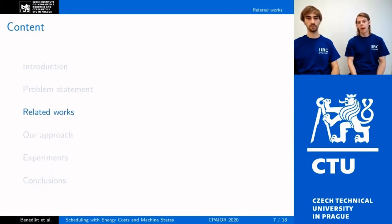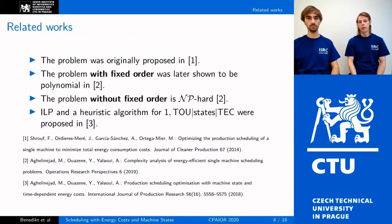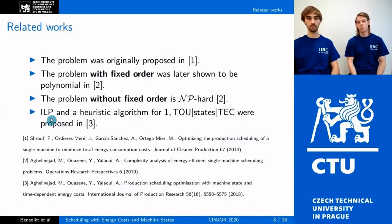Now we summarize the related literature. The scheduling problem jointly considering variable energy prices and machine states was introduced in 2014 and further addressed later. It was shown that if the order of jobs is fixed, the problem can be solved in polynomial time. However, if the order is not given, the problem is NP-hard by reduction from the three-partition problem. Previously, integer linear programming models were proposed and tested on small instances with up to 35 jobs and 200 intervals. However, real-world instances may require hundreds or thousands of intervals. A meta-heuristic was proposed to tackle large instances, but it does not guarantee any bound on solution quality.